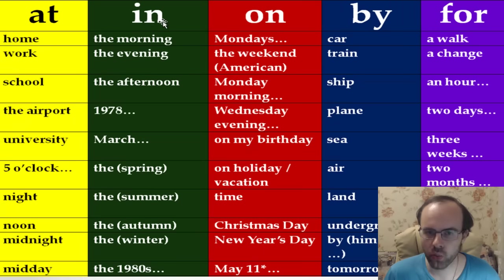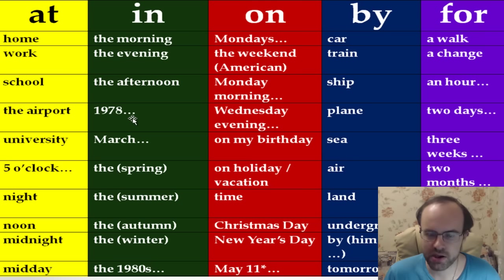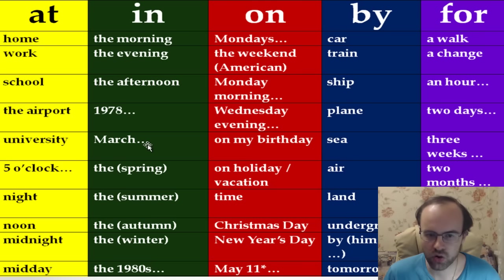Now let's talk about 'in'. We say in the morning, in the evening, in the afternoon. We use 'in' with years — for example, in 1978, in 1999, in 2015. We also use 'in' with months: in March, in February, in December, in April, in July, and so on.